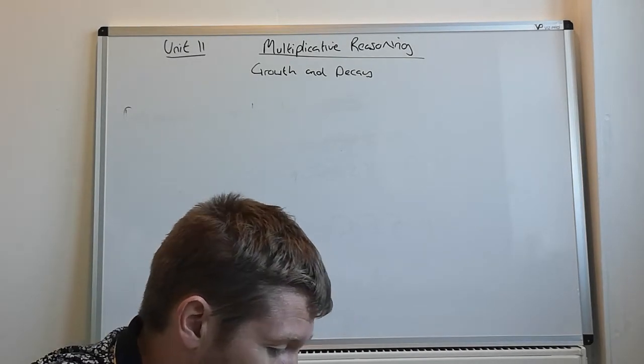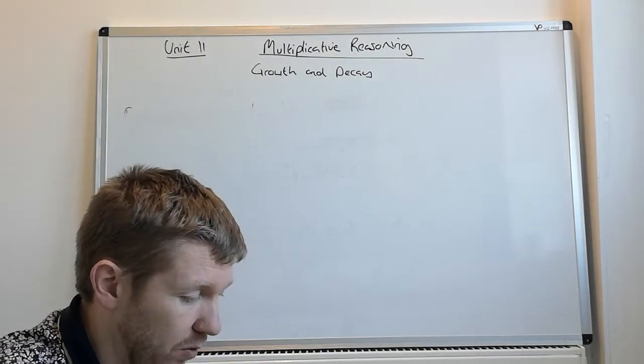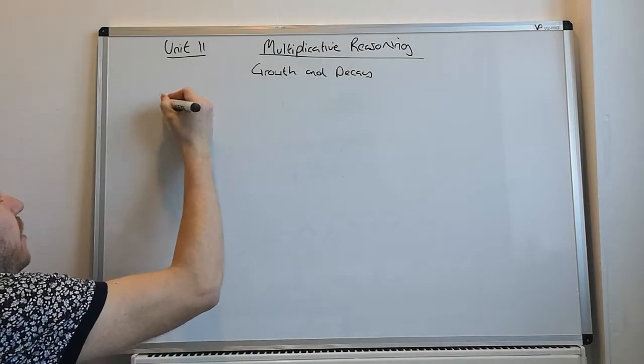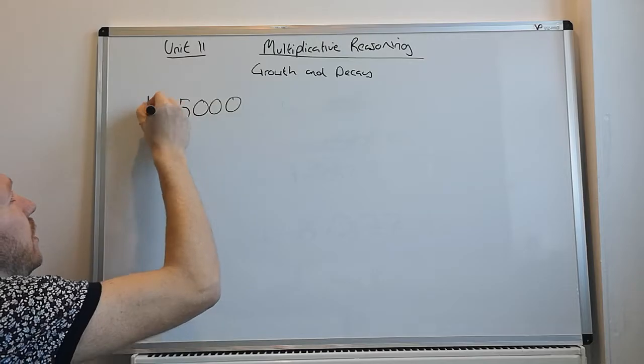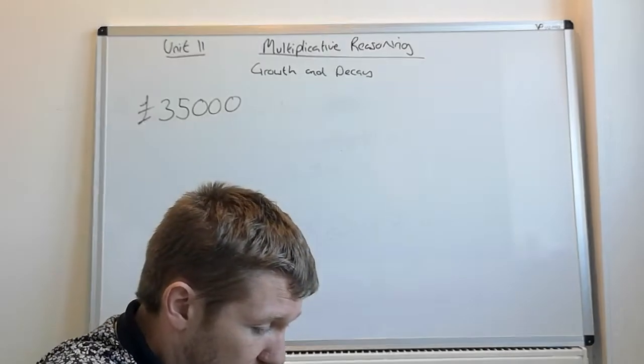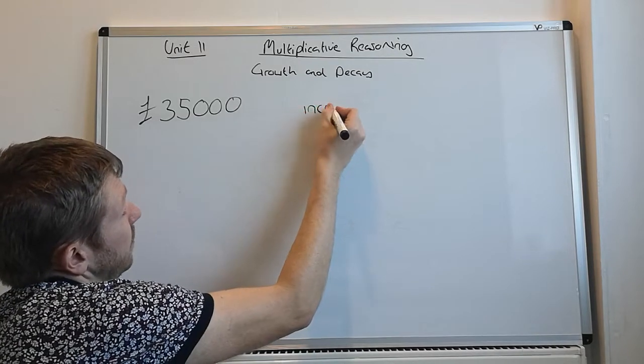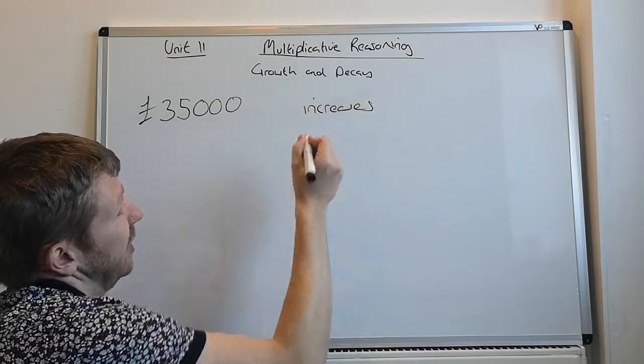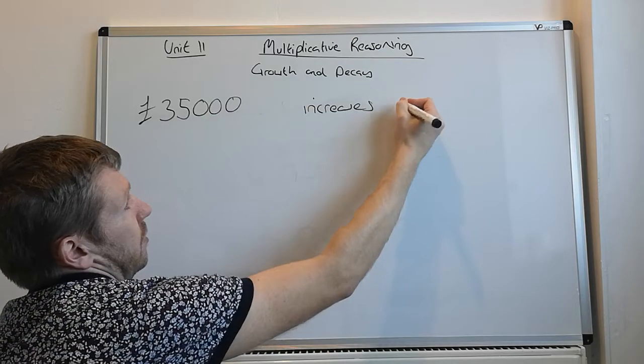Question 7: Tristan buys a flat for £35,000. Obviously, not anywhere local to us, because you won't get a flat for £35,000. He buys it for £35,000. In the first year, the value of the flat increases by 12%. Lucky, Tristan.